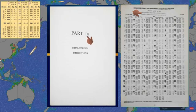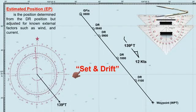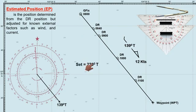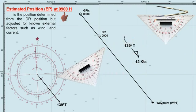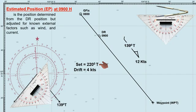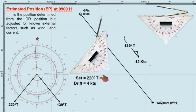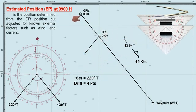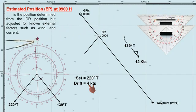I've created a separate video that shows how to determine the set and drift — be sure to check the link in the description for all the details. By applying the set and drift to our DR position, we can determine our estimated position. In this scenario, let's assume we've already determined the set, which is 220 degrees true, with a drift of 4 knots. Let's determine the ship's estimated position at 0900 hours. First, lay down the tidal current direction of 220 degrees true from the ship's DR position at 0900 hours. Since the steaming time from 0800 to 0900 hours is 1 hour, and the speed of the current is 4 miles per hour, we'll measure 4 nautical miles on the latitude scale using a divider. These 4 nautical miles represent the distance the current has pushed the ship during this time.